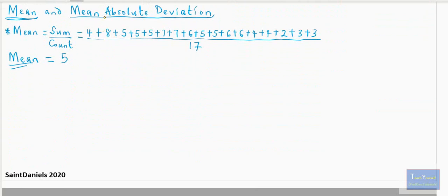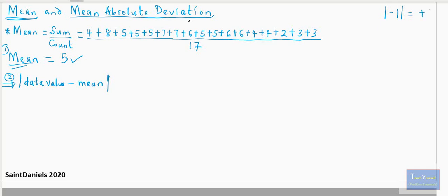The next thing we are going to do is find the Mean Absolute Deviation. To find the Mean Absolute Deviation, there are three steps involved. The very first step is finding the mean, which is the average — which we've just done. The second step is to find the absolute difference of each data value and the mean. Before we proceed, remember: when you say absolute, the absolute of a negative number gives you the positive number. That is, the absolute value of negative five is just five. Take note of that.